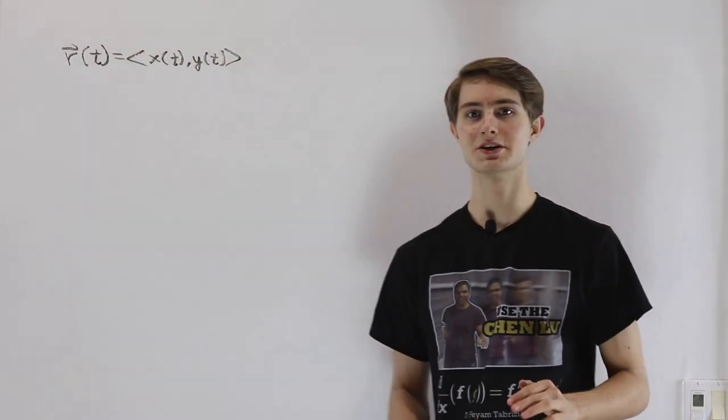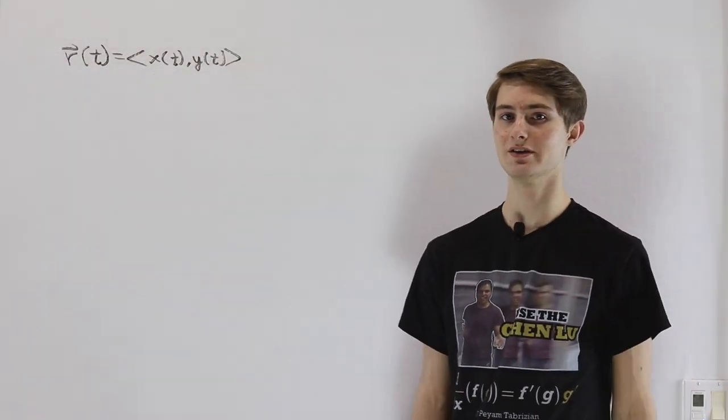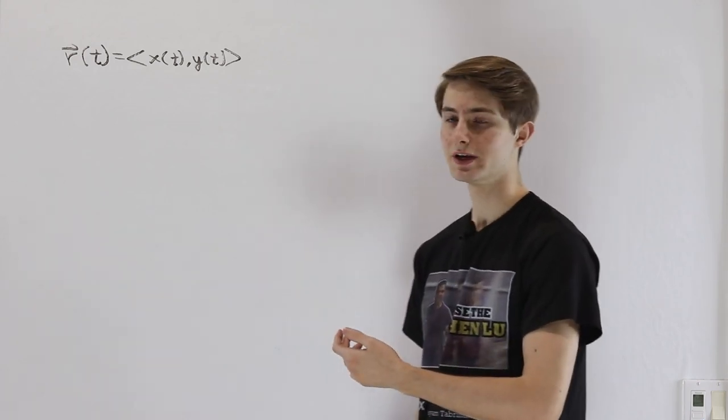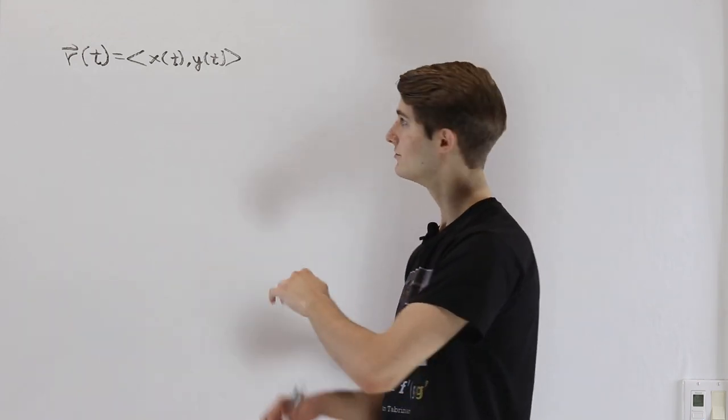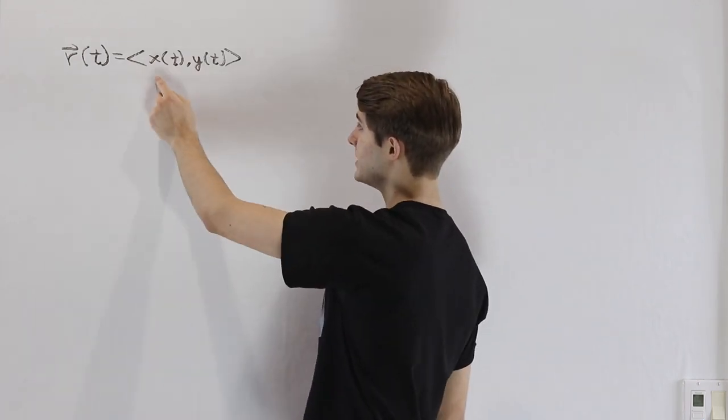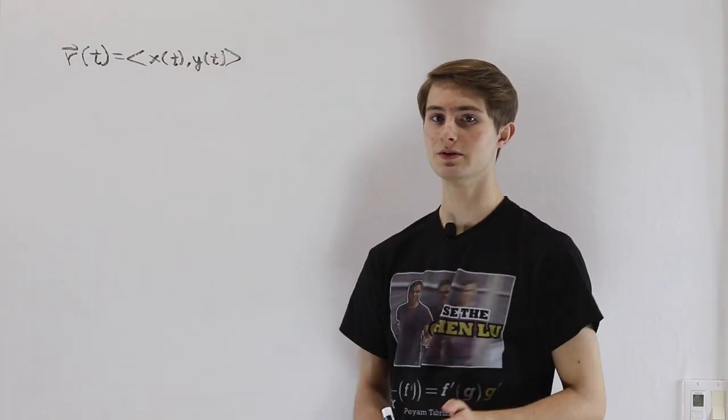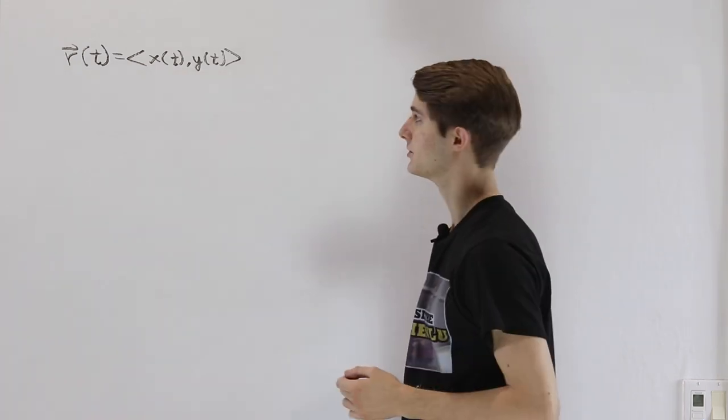We are going to talk about parametric curves and how to find the arc length of a curve. To start out, we have to realize that if we are looking at a vector such as r in terms of its x and y components, we could have both of those components be functions of some other variable t.